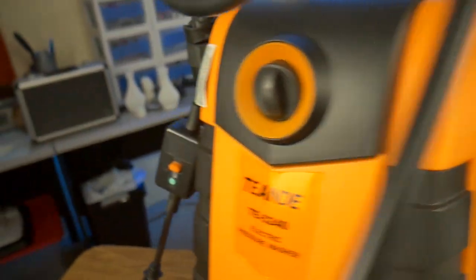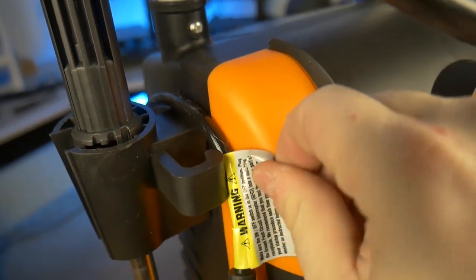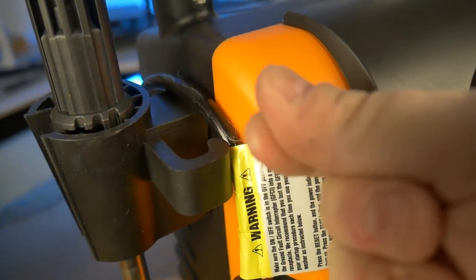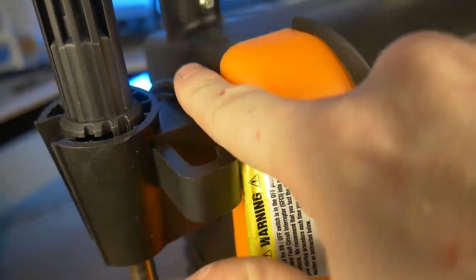The adhesive on the warning sticker on the power cord was very gooey and the label was sliding around exposing the sticky residue on the cord. As you can see, animal hair and dust were already starting to cling to the surface of the power cord.